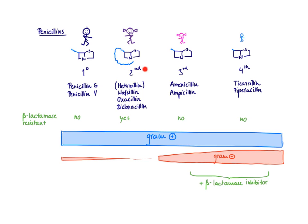Looking at the second generation, which has this very bulky side chain that nicely protects the beta-lactam ring, the beta-lactamases might have a lot of trouble getting in there, because this bond that can be destroyed is very well protected. Indeed, the second generation penicillins are beta-lactamase resistant. The daughter and son — those little kids — have an even smaller side chain that definitely is not going to protect from beta-lactamases, so both are not resistant to beta-lactamases.